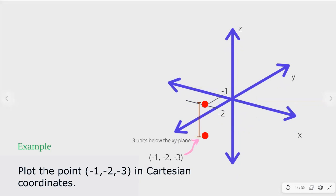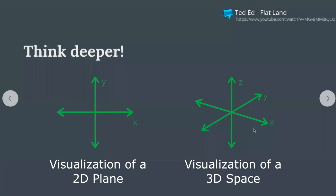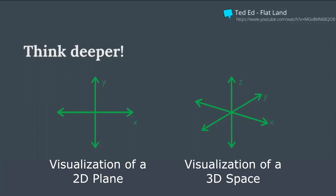On the other hand, the point with coordinates (−1, −2, −3) is 3 units below the xy-plane. The x and y-axes form a mathematical visualization of a 2D space or a plane. Similarly, the x, y, and z-axes form the visualization of a 3D space. How about a 4-dimensional space? All you have to do is add a 4th axis. However, in reality, this is quite hard to conceive. You may want to see the TED-Ed video that will challenge your perception of dimensions — you may click the link above.